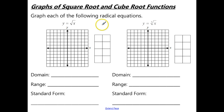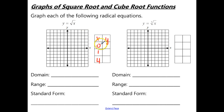First we're going to make a table of values using the key critical points. The x-coordinates we'll use for the square root of x are 0, 1, and 4. The square root of 0 is 0, the square root of 1 is 1, and the square root of 4 is 2. These are the critical points we'll use to plot.